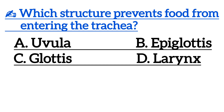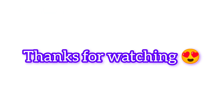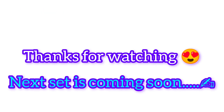Which structure prevents food from entering the trachea? Correct answer is option B: epiglottis.